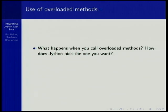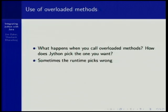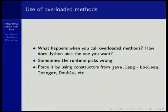One thing to also consider with `toJava` is that the choice of method invoked on your behalf — if the method is overloaded in its signature — involves a fairly complex algorithm which selects which one. If it chooses wrong, you need to ensure it picks the right one. Sometimes the runtime picks wrong, so force it by using constructors or casting on those arguments of that particular method.